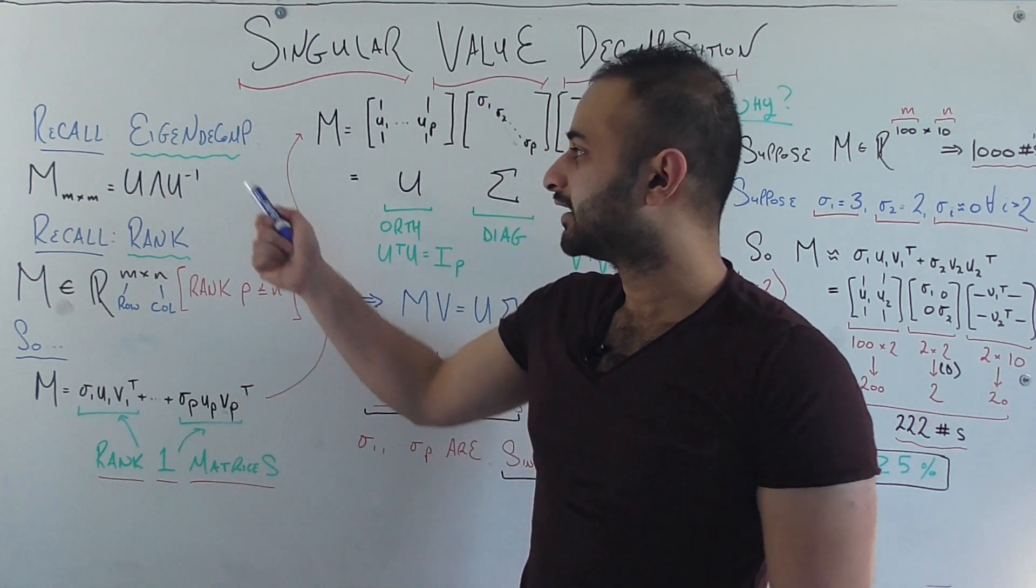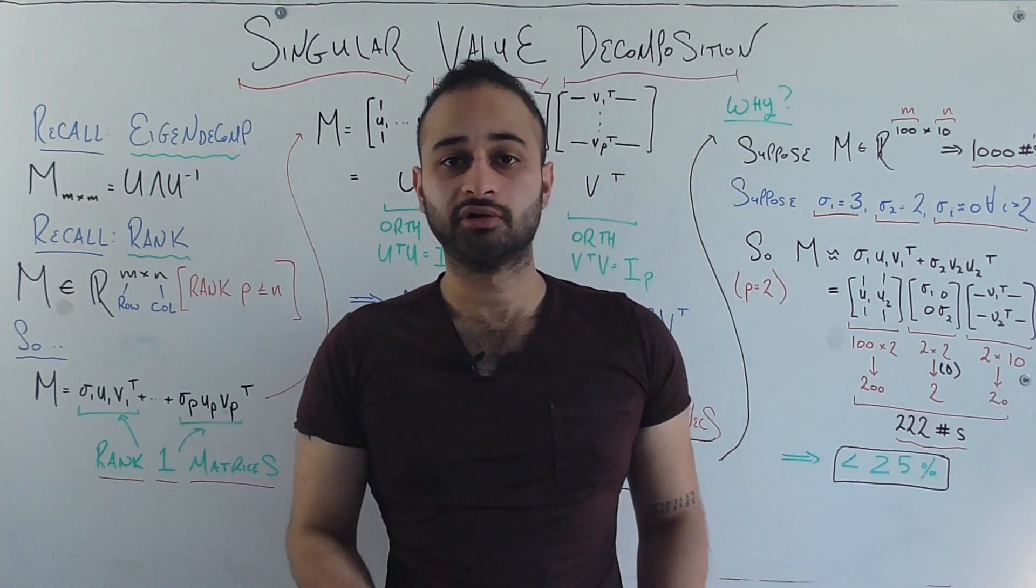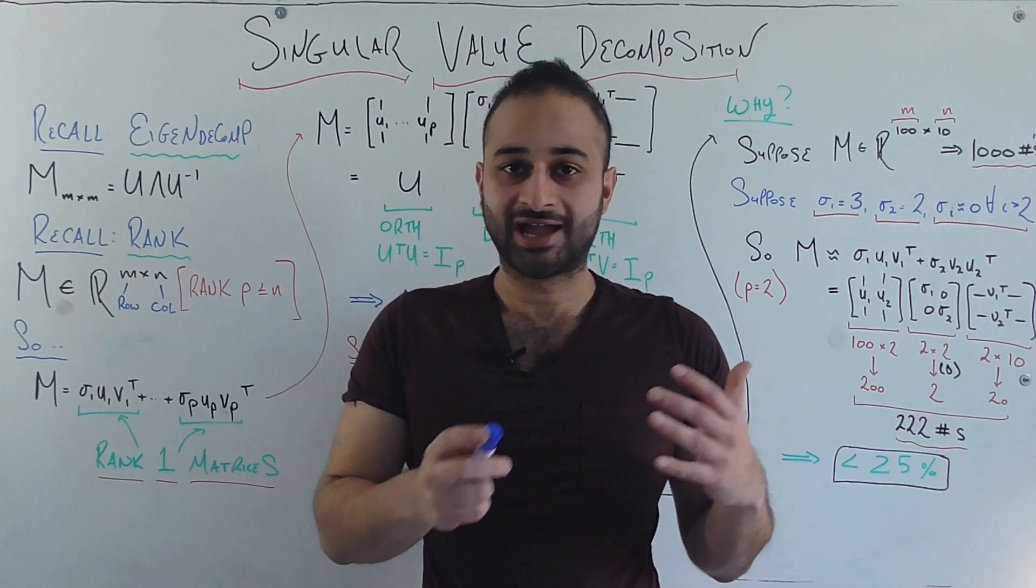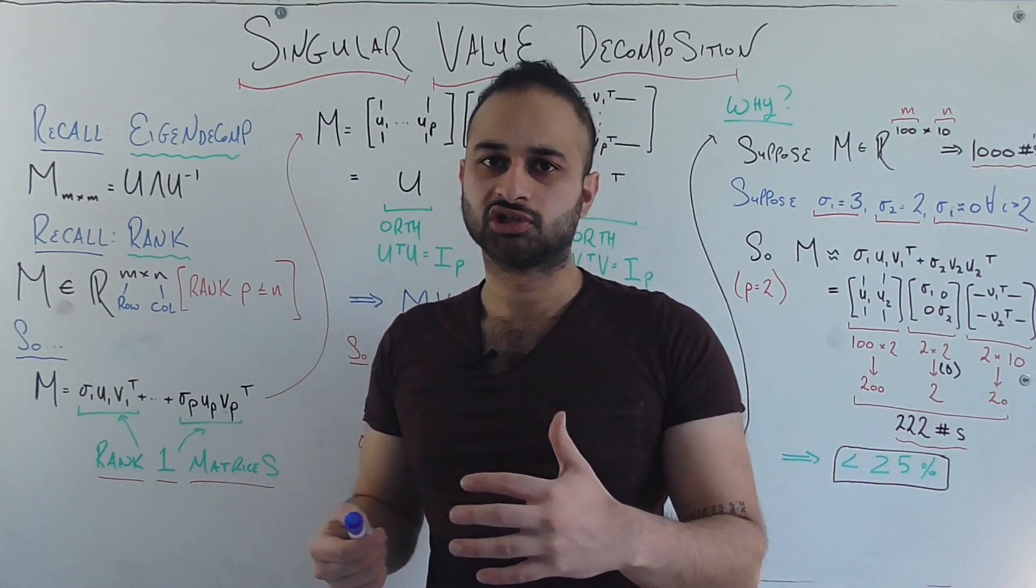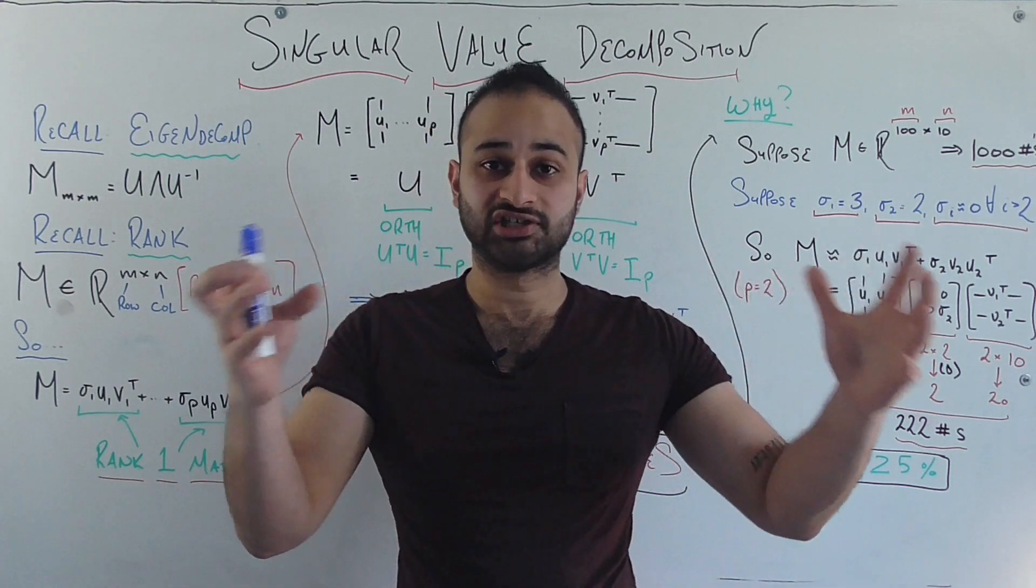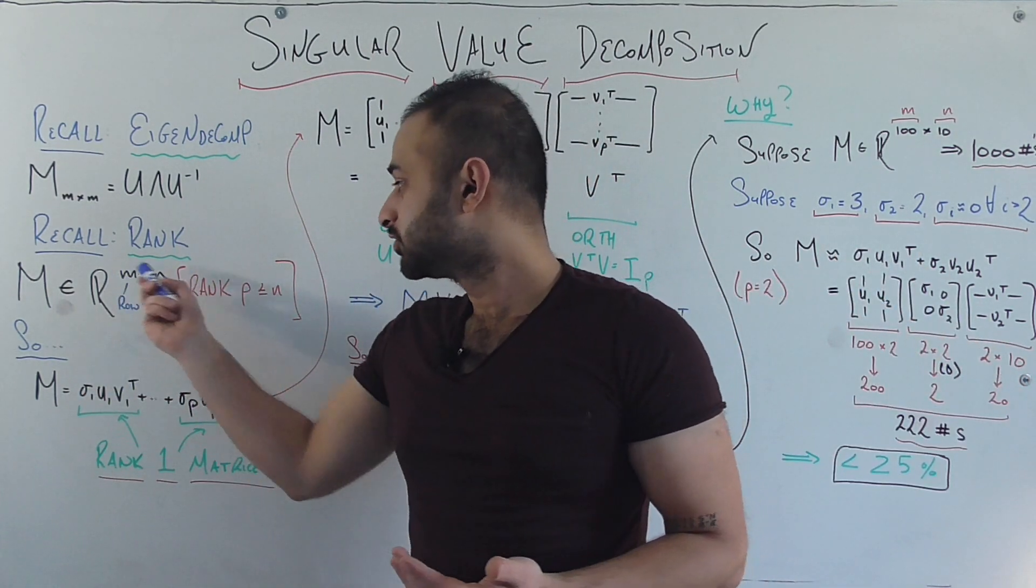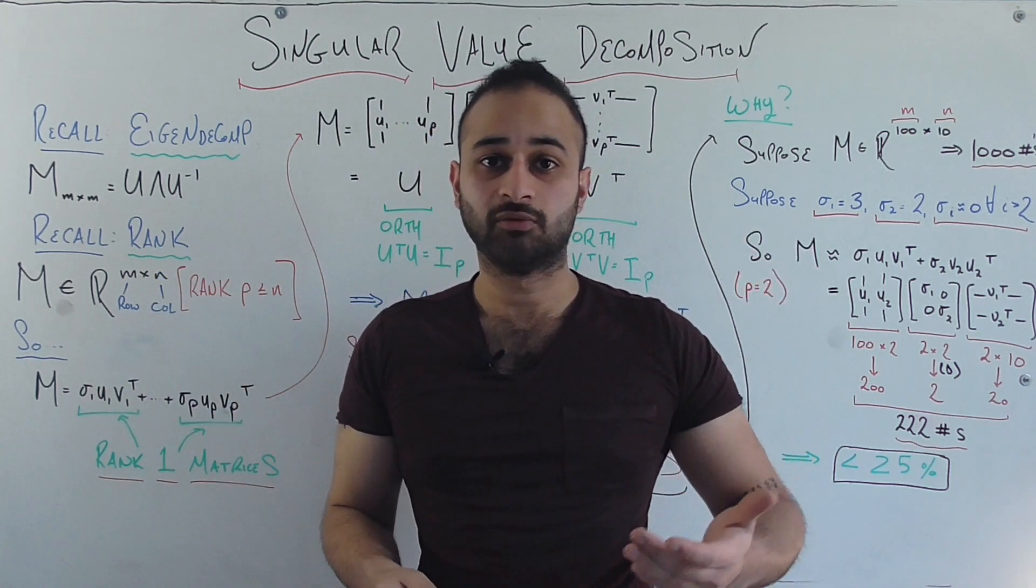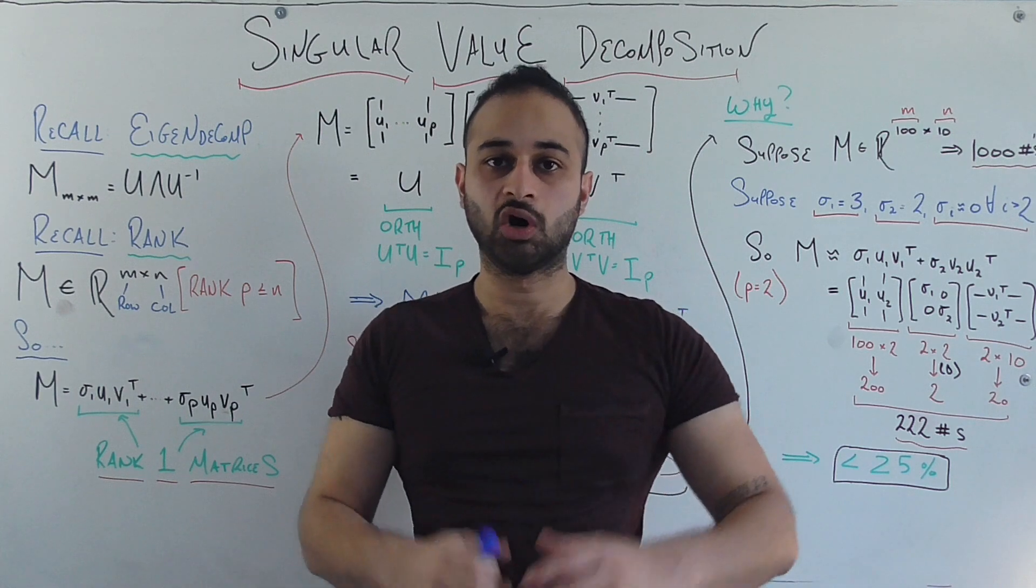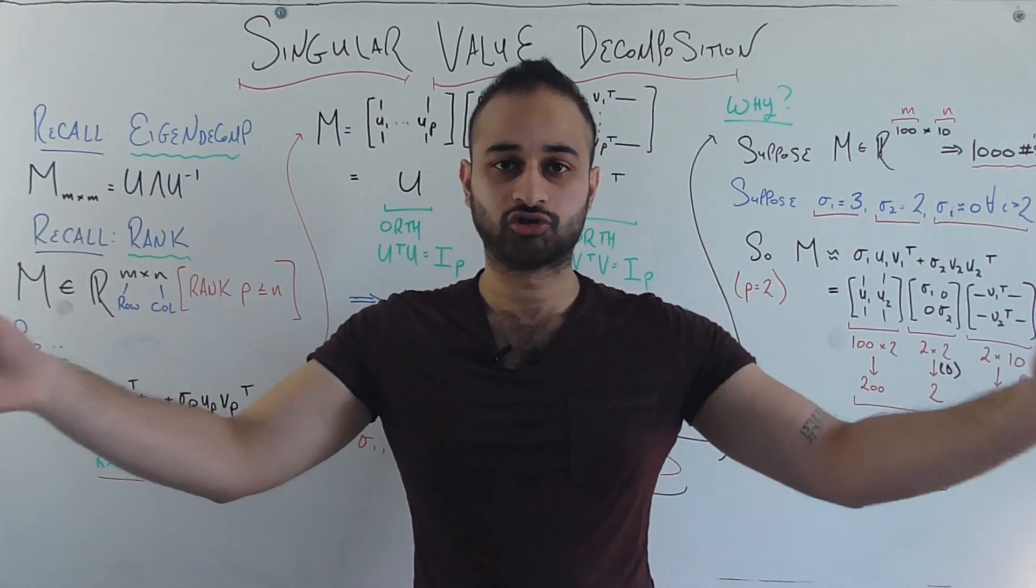Now going back to the eigendecomposition for a second, we learned that the eigendecomposition can only be used for diagonalizable square matrices, so it's only a small class of matrices. Now the SVD basically generalizes that, says that if you have any M by N matrix, M being the number of rows, N being the number of columns, then we can use this decomposition. So this basically opens up to use on a lot more matrices.